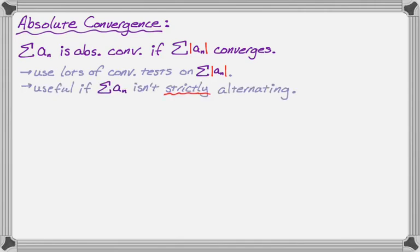It's also really useful if the sum of a sub n isn't strictly alternating, because we only really have a couple of tests we can use on series that alternate — namely the alternating series test — and that requires strict alternation. So if the sum of the absolute value of a sub n converges, then we'll say the series is absolutely convergent.